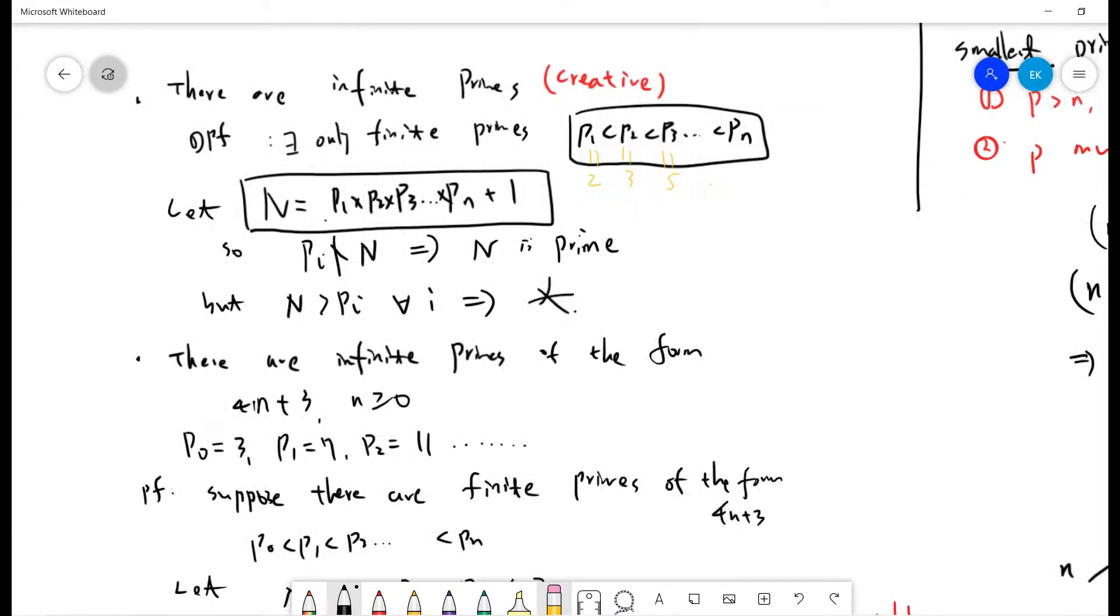The simplest case that people know is that there are infinite primes. Basically, this proof is very creative by the ancient Euclidean. The proof is: suppose there are only finite primes. So let's say p1, p2, p3, up to pn. And p1 is 2, p2 is 3, p3 is 5, everybody knows.